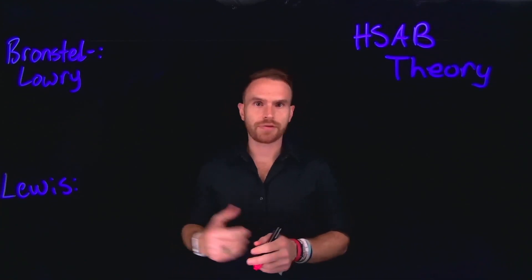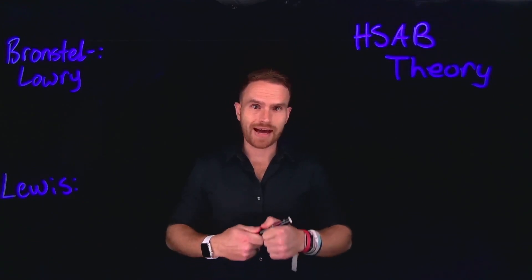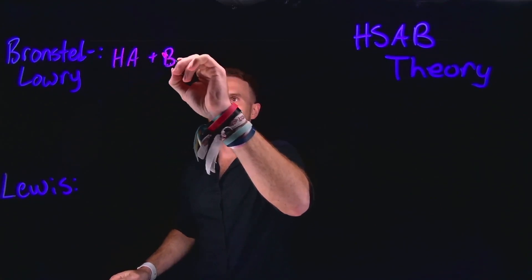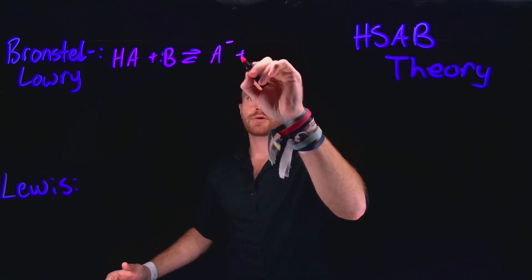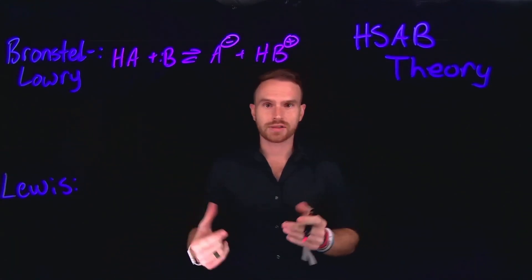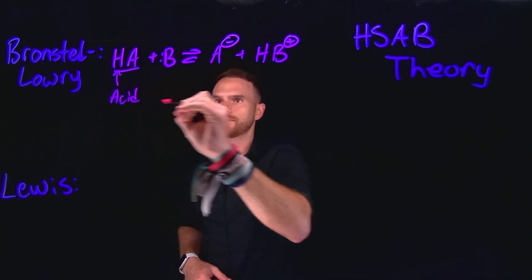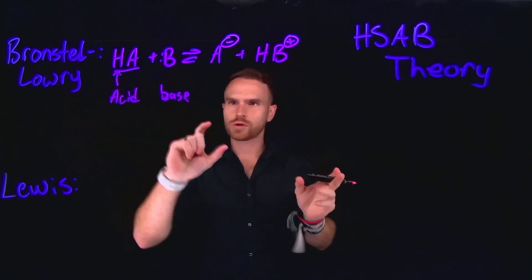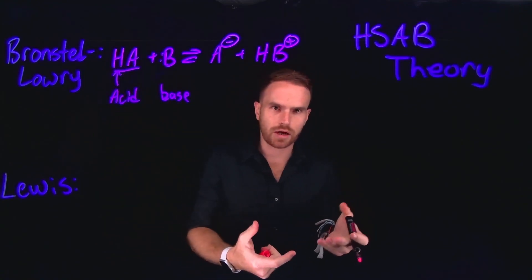Previously in chemistry courses you probably learned about the different definitions for acids and bases. The most popular one in general chemistry and likely in organic chemistry was the Brønsted-Lowry definition. In that definition we are largely concerned with the transfer of a proton — one reactant is a proton donor, one is a proton acceptor. HA, since it donates its proton, is the Brønsted-Lowry acid; B is the base; and on the right hand side you have the conjugate acid and base.